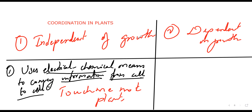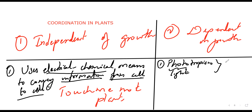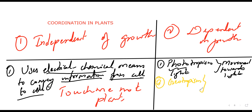Now for movement dependent on growth, there are mainly three to four important types. The first is phototropism — 'photo' meaning light — which refers to movement towards light. The second is geotropism, which is movement towards gravity.